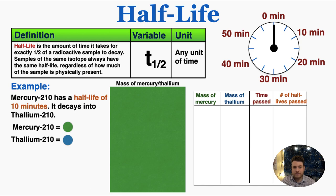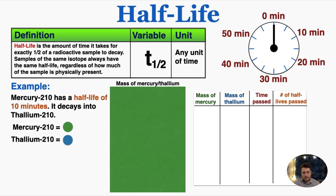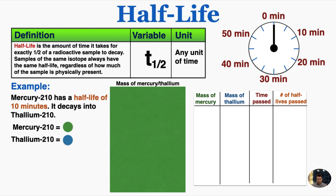This is a visualization of what half-life means. Mercury-210 has a half-life of 10 minutes, and it decays into thallium-210. I'm going to symbolize mercury with green and thallium in blue. This rectangle will symbolize how much mercury and thallium I have. It's all green right now, so that means it's all mercury and hasn't decayed to thallium yet. I'll imagine that this is 64 kilograms of mercury.